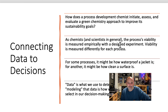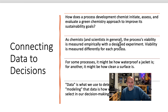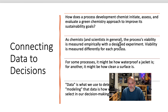How does a process development chemist initiate, assess, and evaluate a green chemistry approach and improve its sustainability goals? We want to make sure that any process we come up with works first. We have to do this with a DOE — a design of experiment. Viability means does it still work if you switch to a greener chemical? That's the number one thing. Data is what we use to determine this viability, and the model is the mathematical relationship we show between the things we change and how viability has changed.